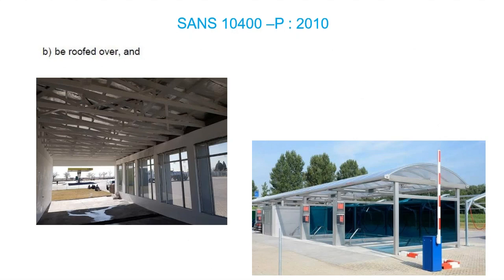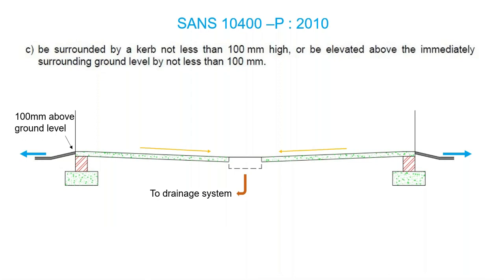The standard says the washing area shall be roofed over — it's not a recommendation — because we don't want rainwater falling on this area, which would be contrary to the Act. It shall also be surrounded by a curb not less than 100mm high, or be elevated above the surrounding ground level by not less than 100mm. This keeps stormwater in its own direction so that the soapy waste water ends up going into the drainage system and the stormwater stays out.